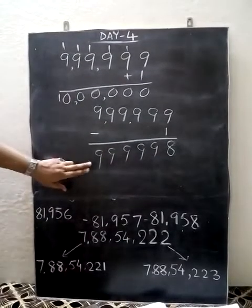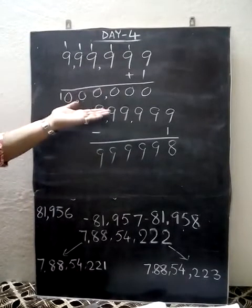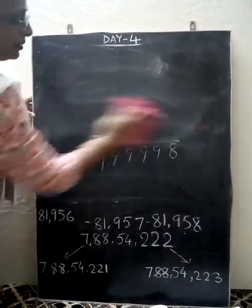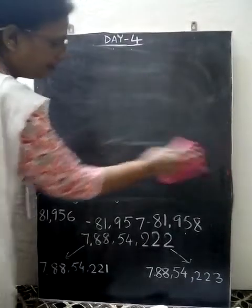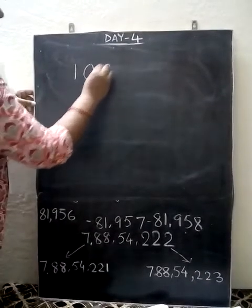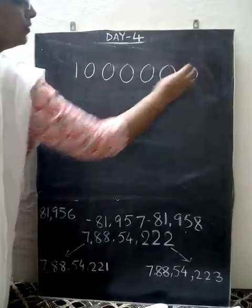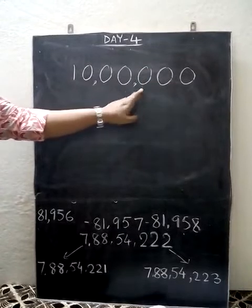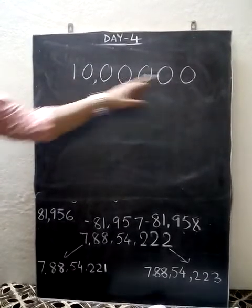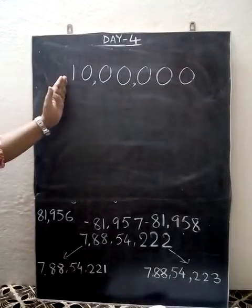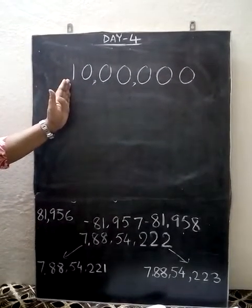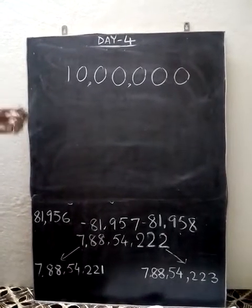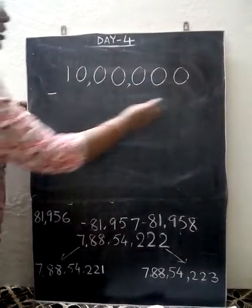Now it gets a little more complicated when you are asked to find the successor and predecessor of the smallest numbers — smallest 5-digit, 6-digit, 7-digit, or 8-digit. Here I have taken 10 lakh, the smallest 7-digit number. It is very easy to find its successor, but it is difficult to find the predecessor. Well, it is not really difficult — I must say it is easy — but a few children find it difficult in subtraction. So how are you going to find its predecessor? Please always practice this type of subtraction.